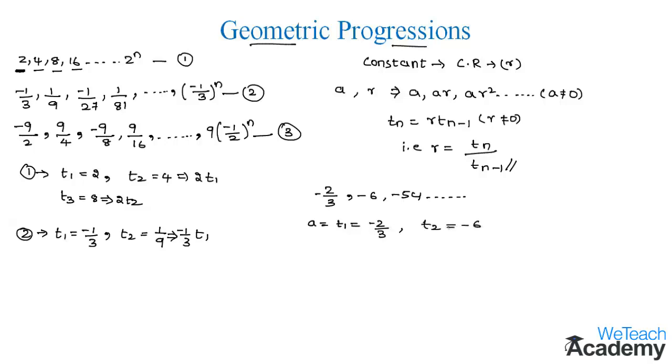So the common ratio would be here the ratio between any two terms. So let us consider t2 divided by t1. So the second term is here minus 6 divided by the first term which is given as minus 2 divided by 3. So on reciprocating the denominator we get minus 6 into 3 divided by minus 2.